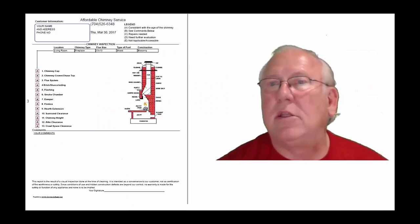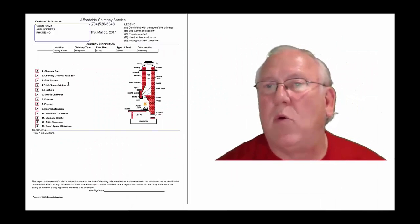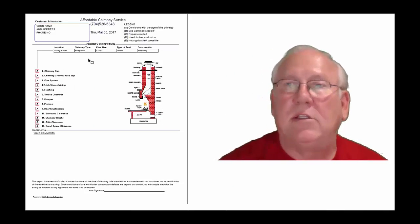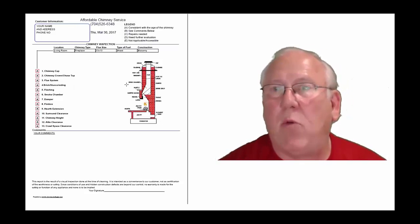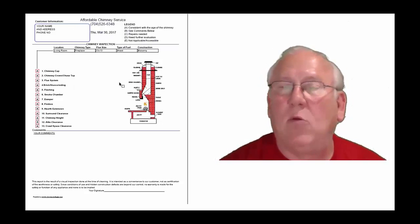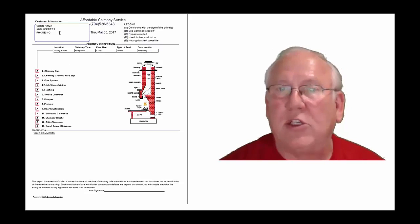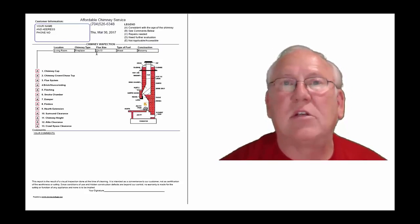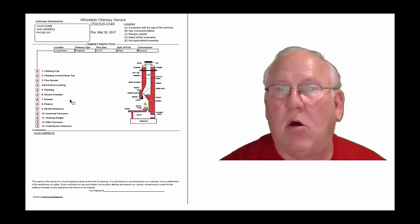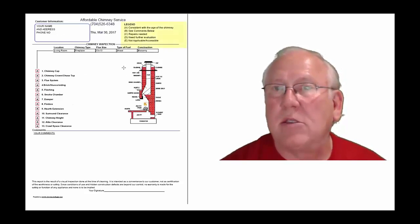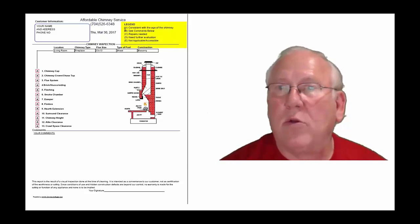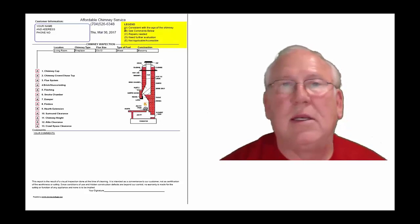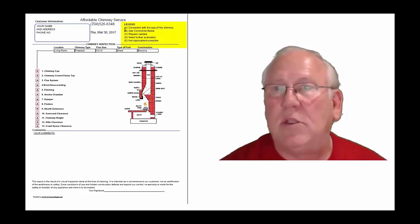Now let's take a look at the inspection report and see how it reads out. This is a generic report — this is exactly what you will get, only your information will be filled into all these blanks. The upper right-hand corner of the report is the legend.